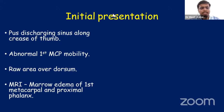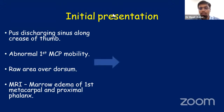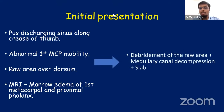The initial presentation was a discharging sinus along the crease of the thumb, abnormal first metacarpophalangeal mobility, and a raw area on the dorsum of the hand. We performed an MRI showing marrow edema of the first metacarpal and proximal phalanx. We performed debridement of the raw area along with medullary canal decompression and slab immobilization.